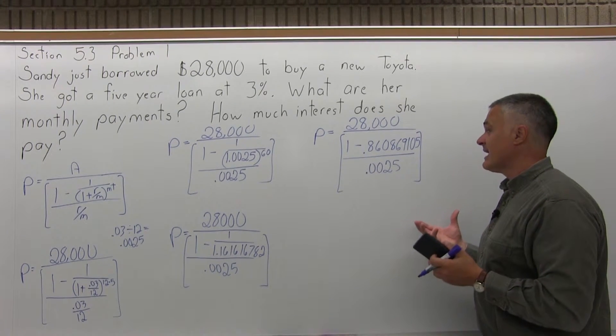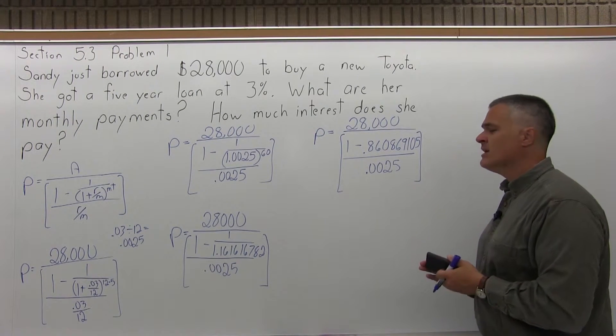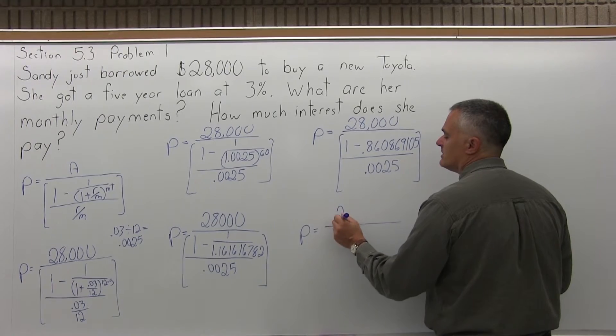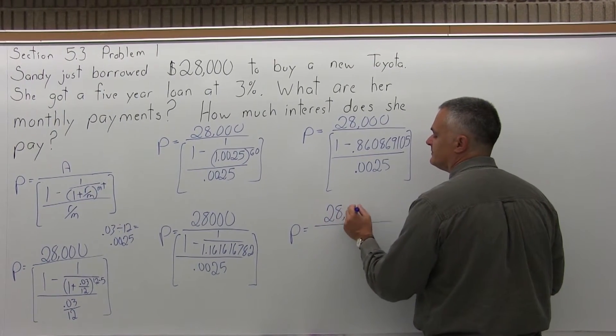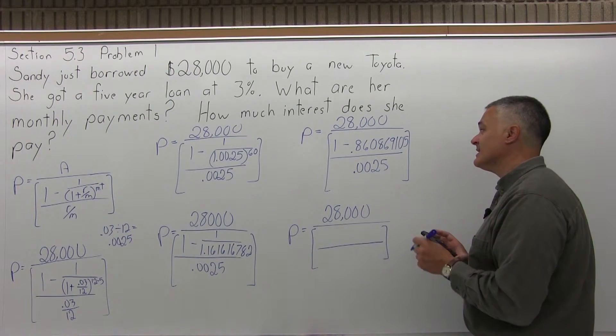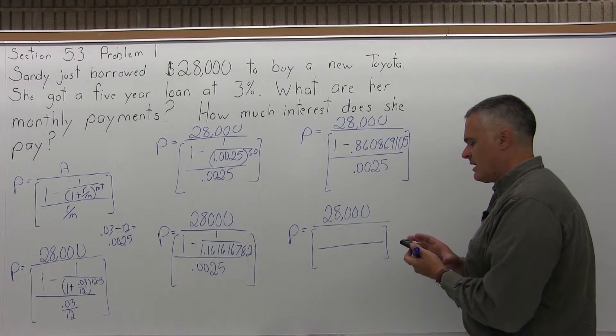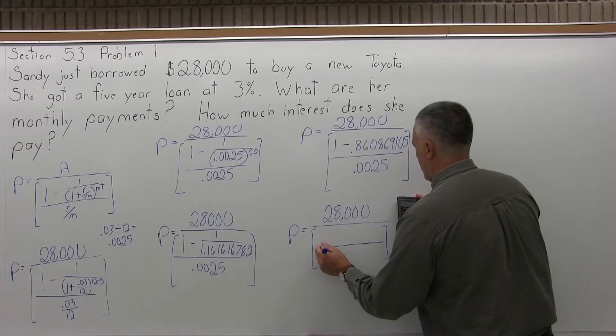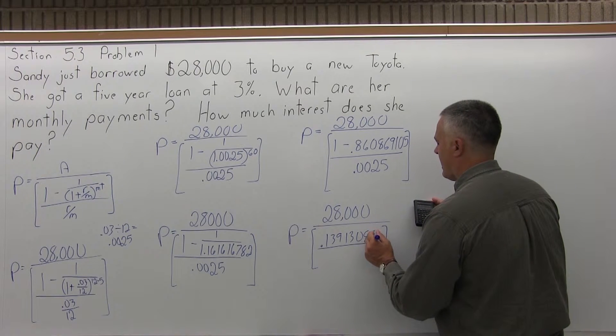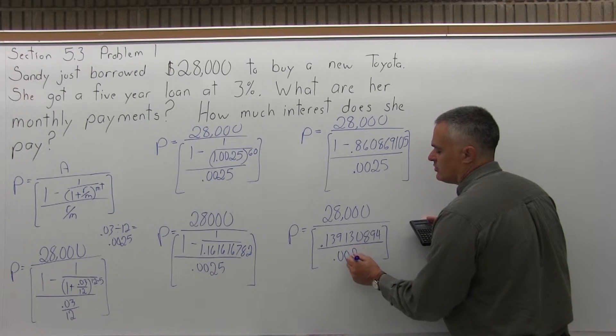Now, in the top of the brackets, I have a subtraction, 1 minus 0.860869105. Let me do that subtraction. And when I do, I'll have P equals, still 28,000. And then in the brackets in the top, when I do 1 minus 0.860869105, I get a result of 0.139130894. And in the denominator of the brackets, 0.0025.